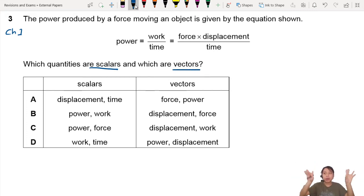So they want you to sort out all these quantities into scalars and vectors. Now let's take a look at each of them. Displacement, also known as S with a vector head on top, this is actually a vector. So this is vector. Time is a scalar.